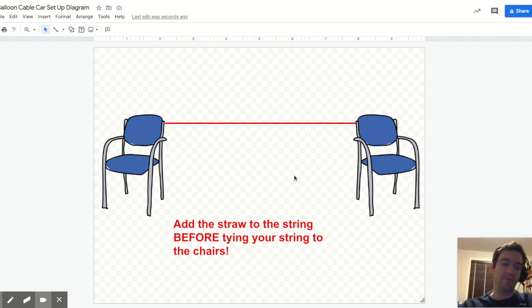You could attach the straw first, build your cart, and then tape it to the straw afterward. I actually built my entire cable car first so that I could come back and allow it to move along in that way.